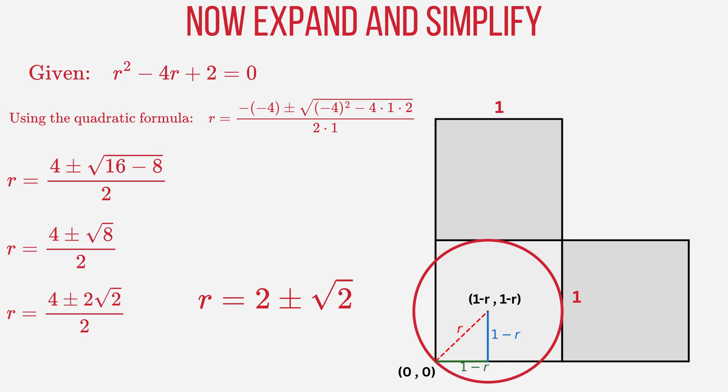But the larger one doesn't make sense in this puzzle. So we choose the smaller value. The radius is 2 minus root 2.